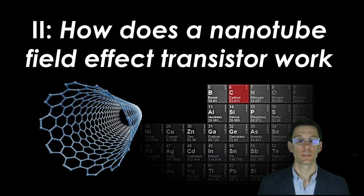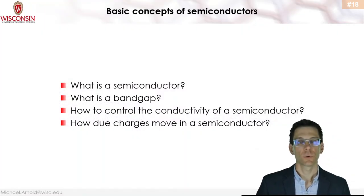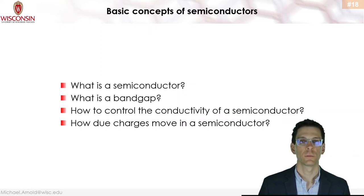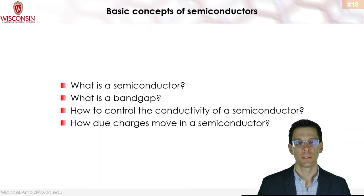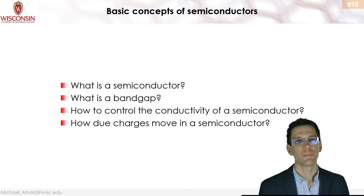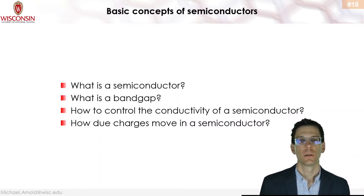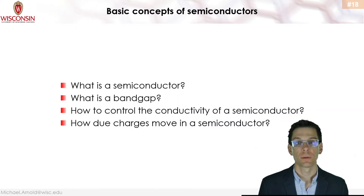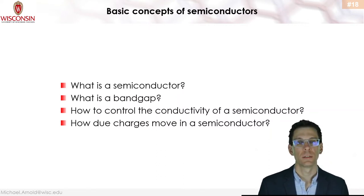Moving on to Part 2: how does a nanotube field effect transistor work? To make this tutorial accessible to people with backgrounds in chemistry, biology, material science, electrical engineering, or physics, we'll start with basic semiconductor concepts: what is a semiconductor, what is a band gap, how do you control conductivity, and how do charges move. We'll then use these to understand how a carbon nanotube transistor works.